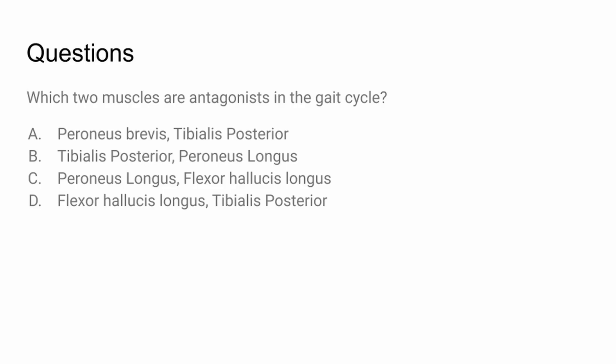Which two muscles are antagonists in the gait cycle? This question really tests your knowledge of anatomy, and knowing the origin, insertion, and action of each of these muscles. The answer is A — the peroneus brevis and the tibialis posterior are both antagonists in the gait cycle.